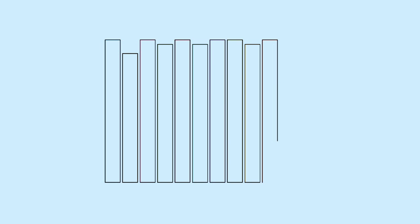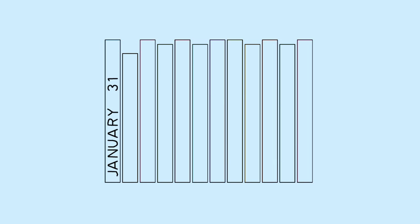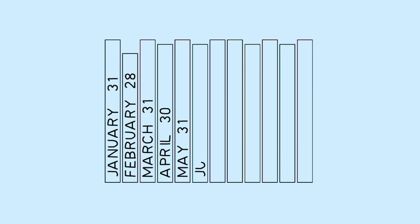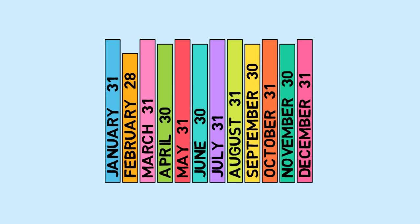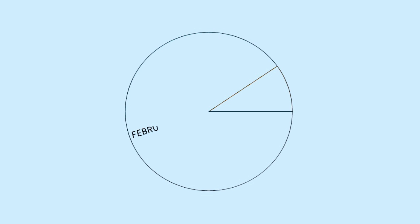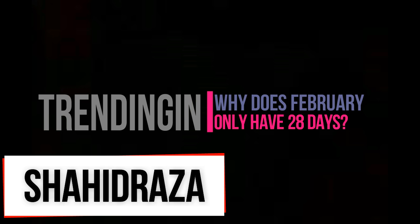Have you wondered why February has 28 days compared to the other months? It is a short month because it has missing days. This is the only month in a year which has 28 days, or 29 in a leap year. So here is the crazy and confusing story of February. My name is Shahid Raza from Trending Inn. Let's start it.